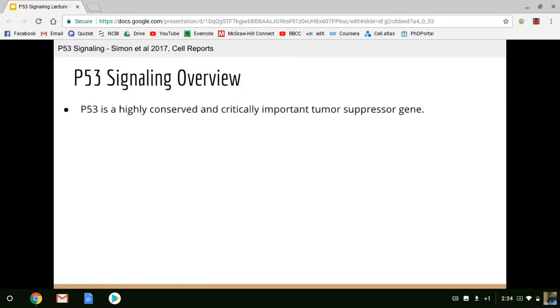p53 is a highly evolutionarily conserved and critically important tumor suppressor gene, a TSG, and homologs of p53 can be traced essentially back billions of years to the origin of multicellular life and it's found across all walks of life. Mutations in p53 are found in 50% of all cancers, which is just a remarkable number and it's the single most mutated gene in all of cancer.